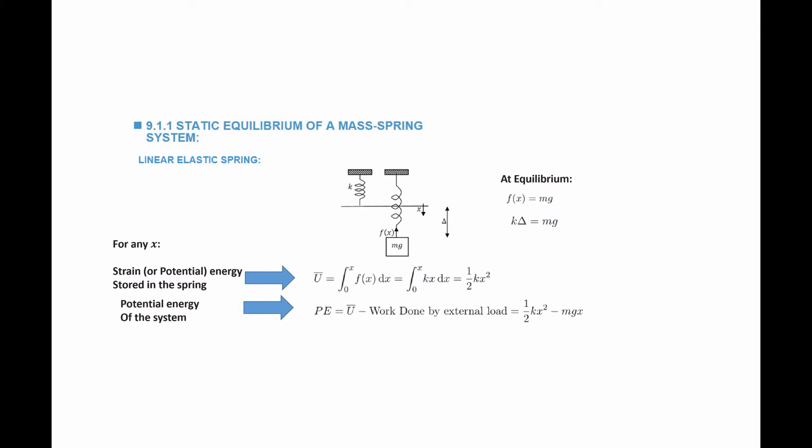We're going to define another quantity called the potential energy of the system. The potential energy is defined as the energy stored in the spring minus the work done by the external load when the mass is moved by distance x. So the potential energy at any distance x is equal to half kx squared minus the work done by the force, which is mgx. When we take the derivative of the potential energy with respect to the extension we get the equilibrium equation kx minus mg.